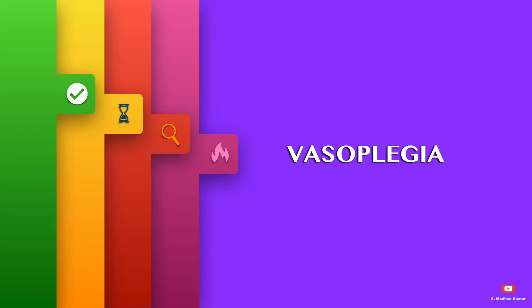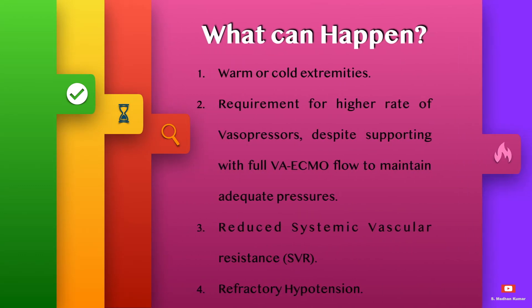Hello everyone. Under the ECMO troubleshooting simplified series, today we will see about vasoplegia on ECMO. It can lead to warm or cold extremities, requirement for higher rates of vasopressors despite supporting with full VA ECMO flow to maintain adequate pressures, reduced SVR, and refractory hypotension.